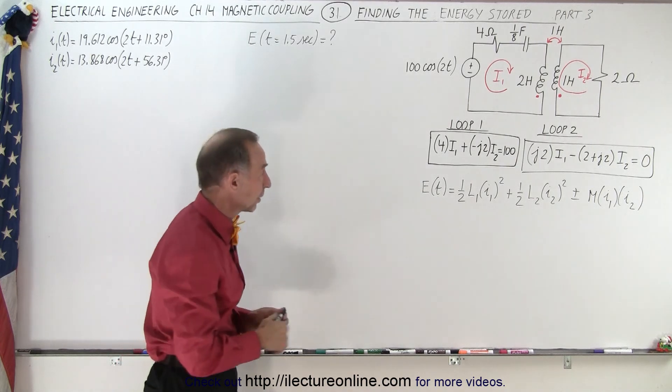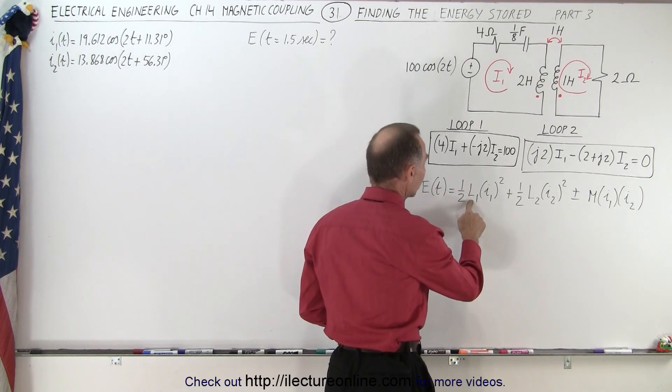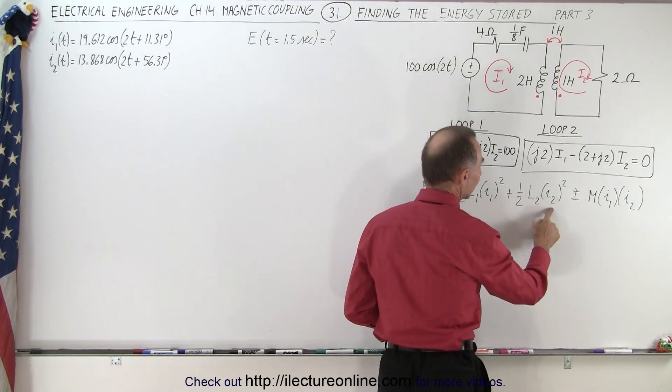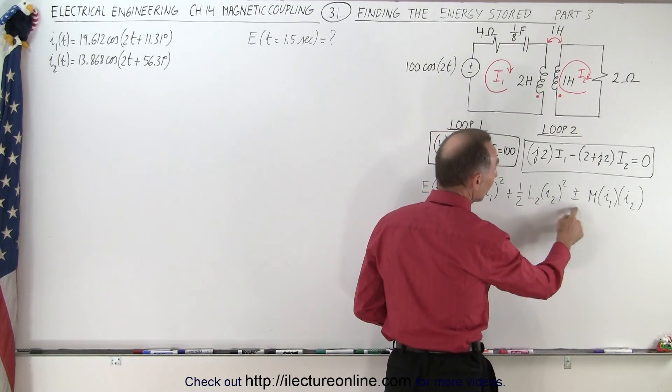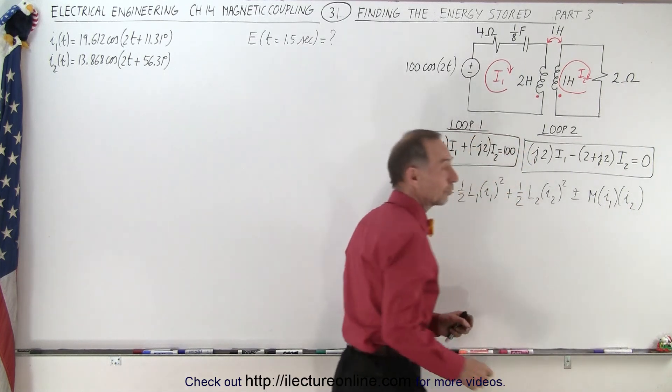The equation to do that is equal to one-half the inductance of the first inductor times the current in the first loop squared, plus one-half times the inductance of the second inductor times I2 squared, plus or minus the mutual coupling times the product of the two currents.